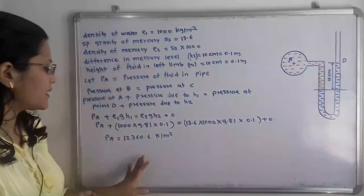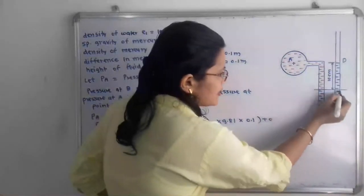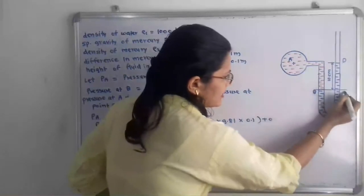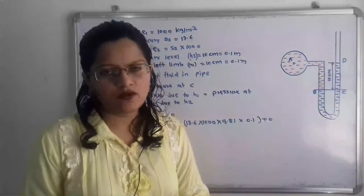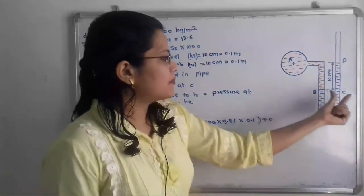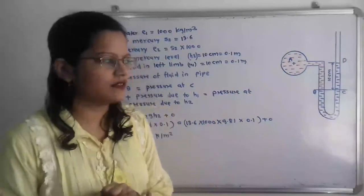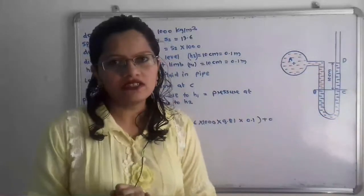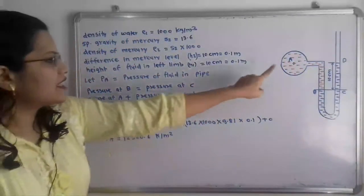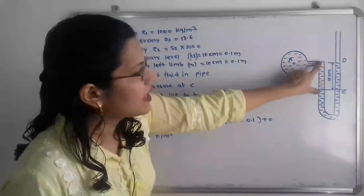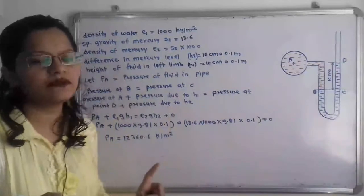We need to find the pressure at center point A. We consider the mercury level in both limbs at points B and C. Pressure at point B is equal to pressure at point C. Pressure at B equals the pressure at the pipe center A plus the pressure due to height h₁ of water above it. Pressure at C equals the pressure at point D plus the pressure due to height h₂ of mercury. Point D is open to atmosphere, so its pressure is taken as zero.